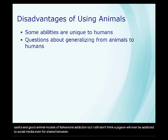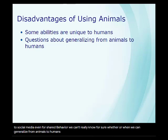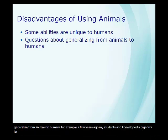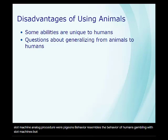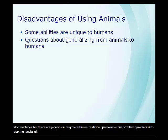Even for shared behavior, we can't really know for sure whether or when we can generalize from animals to humans. For example, a few years ago my students and I developed a pigeon slot machine analog — a procedure where pigeon behavior resembles the behavior of humans gambling with slot machines. But were our pigeons acting more like recreational gamblers or like problem gamblers? The only way to know for sure is to use the results of animal experiments to try and predict human behavior.